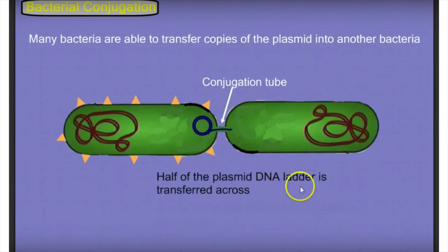Bacterial conjugation: a conjugal visit means getting together, and conjugation is when two bacteria come together and transfer copies of the plasmid via the sex pilus, which is the conjugation tube. Two bacteria come for the conjugal visit and share copies of the plasmid via the conjugation tube or sex pilus.